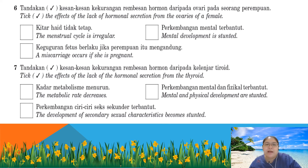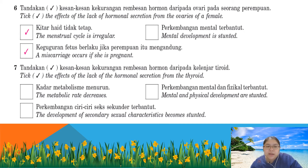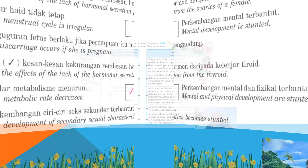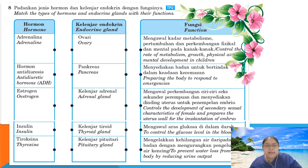Number six: the effects of lack of ovary hormones in females — the first is irregular menstrual cycle, and the second is miscarriage, especially if the woman is pregnant. Mental development being stunted is not related, so tick the first and second answers only. Number seven: effects of lack of thyroid hormone — metabolic rate decreases, and mental and physical development are stunted. Numbers one and three are correct; secondary sexual development is not related to the thyroid.